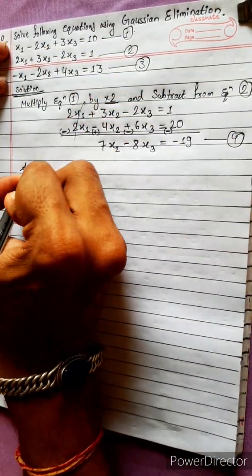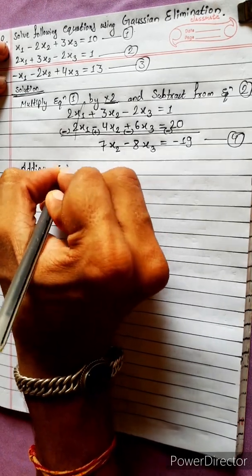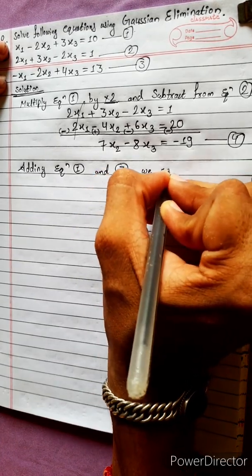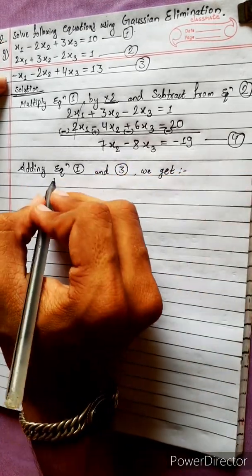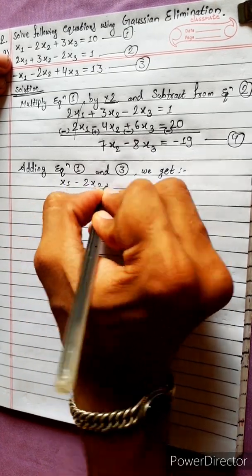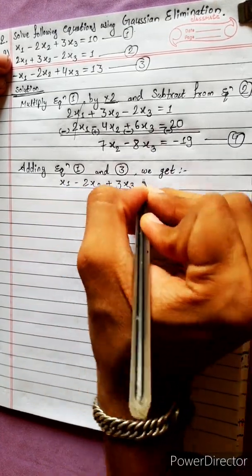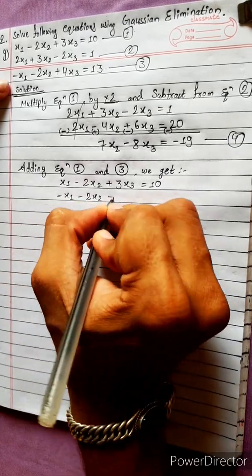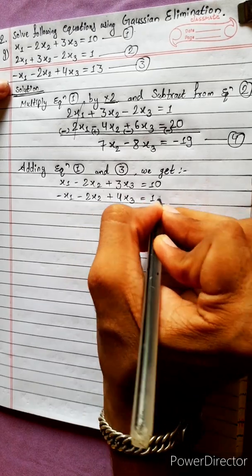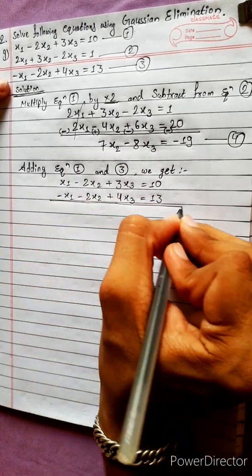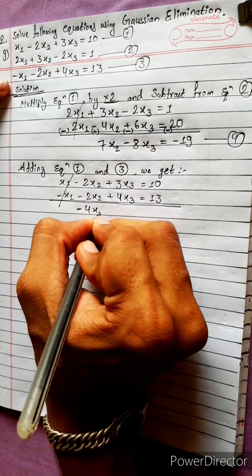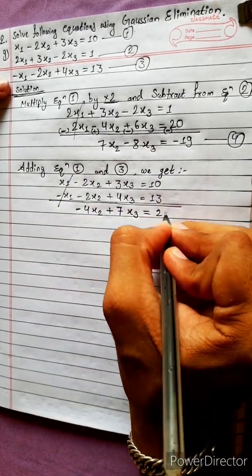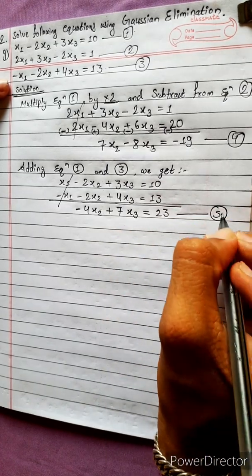Now let's solve equations 1 and 3. No need to multiply — we directly add equation 1 and equation 3. We get: x1 - 2x2 + 3x3 = 10 added to -x1 - 2x2 + 4x3 = 13. The x1 terms cancel, giving us -4x2 + 7x3 = 23. This is our equation 5.